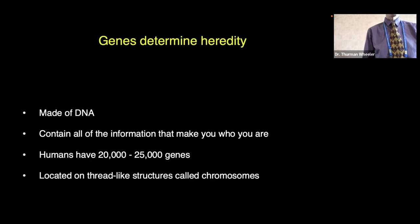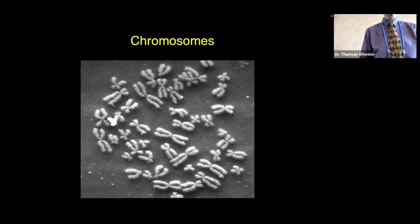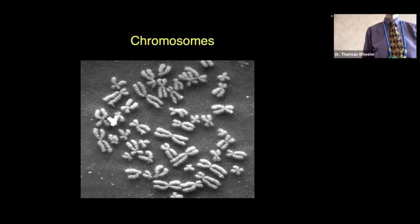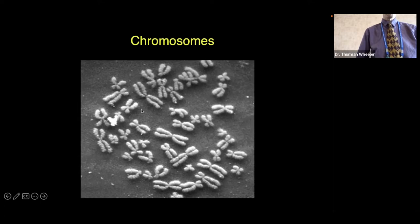Humans have between 20 and 25,000 genes, located on thread-like structures called chromosomes. Here's a picture of what chromosomes look like under a microscope. They've been treated to make them more visible, and they appear like X shapes — some big, some medium, some small relative to one another.